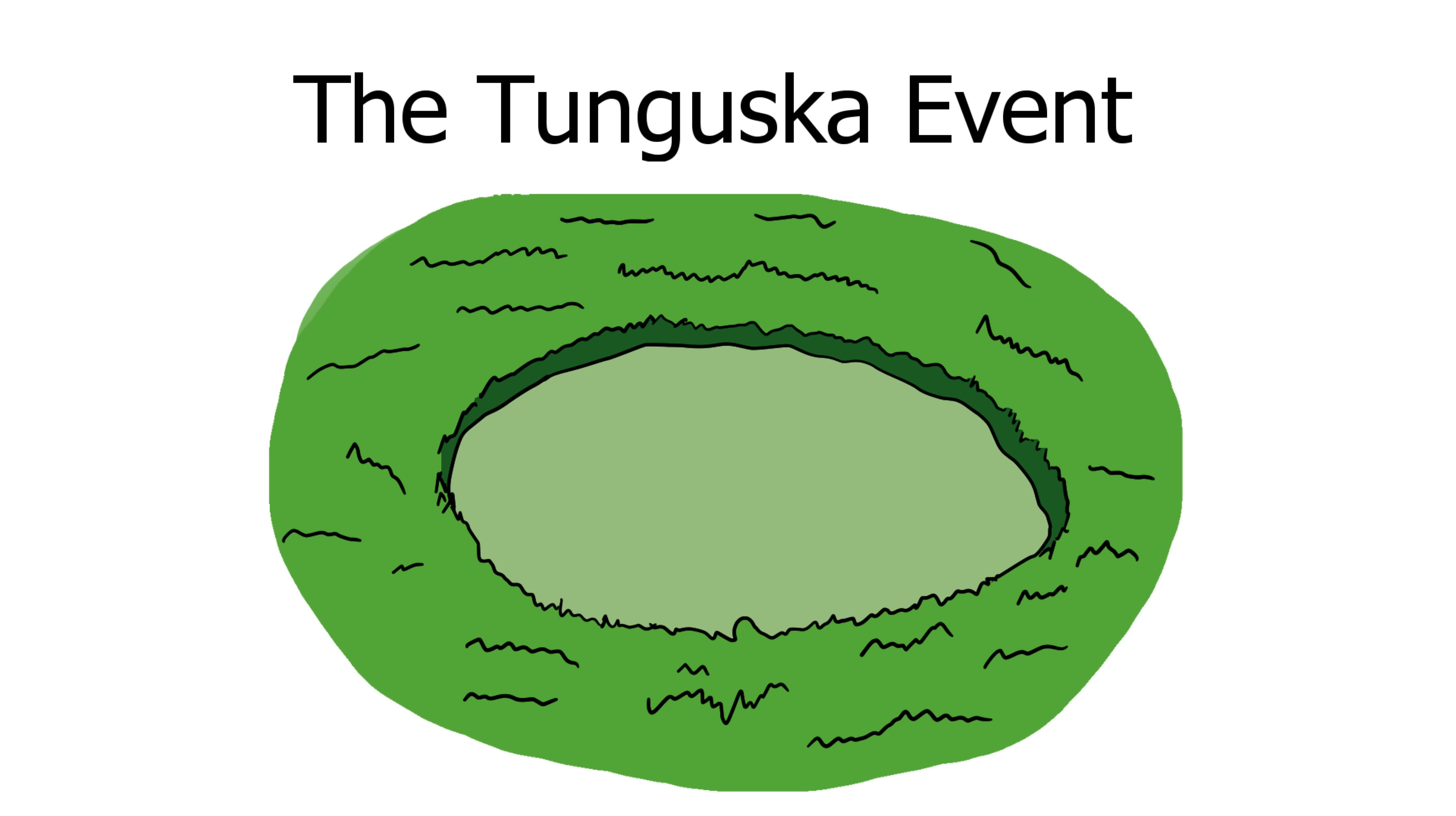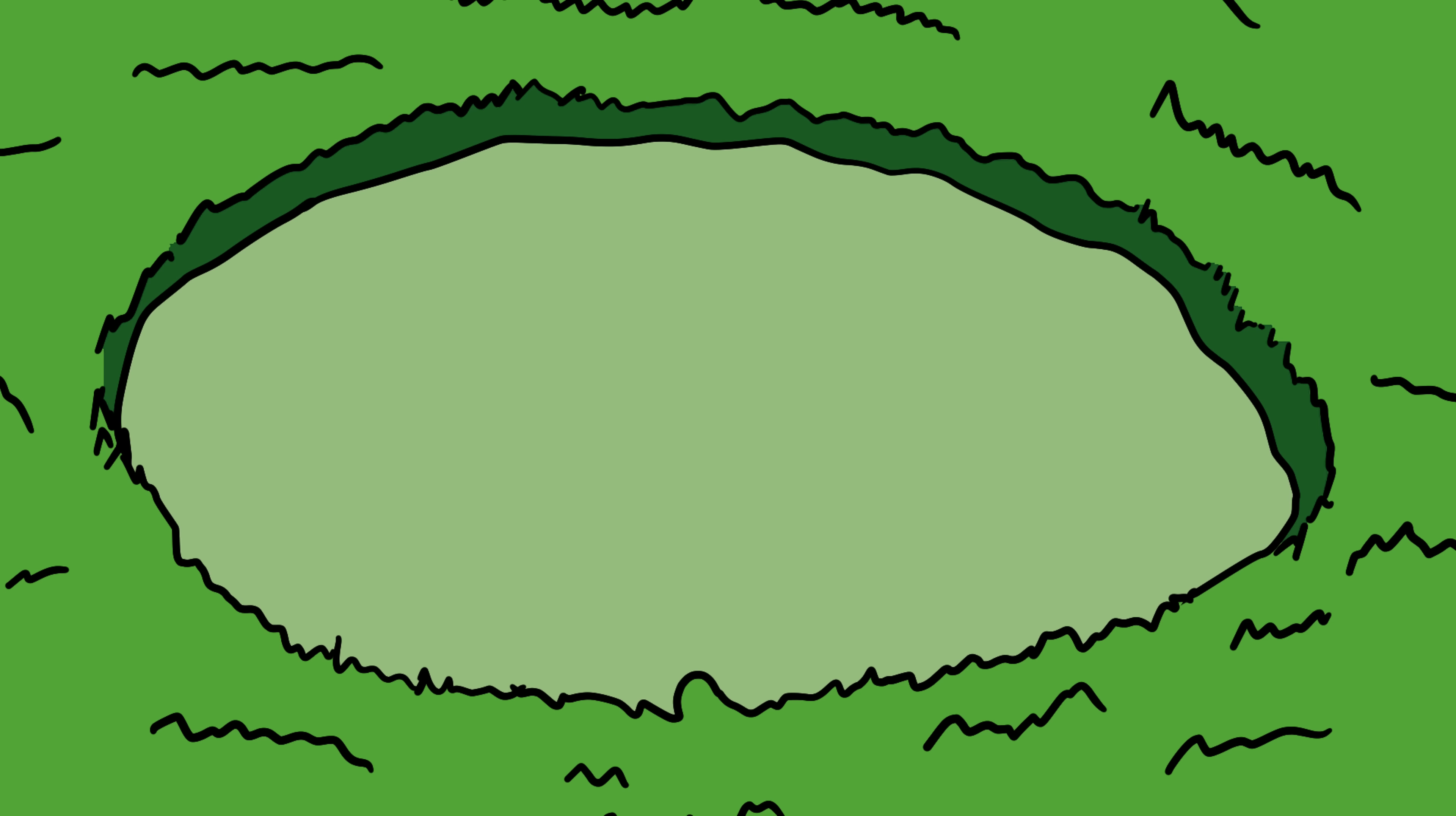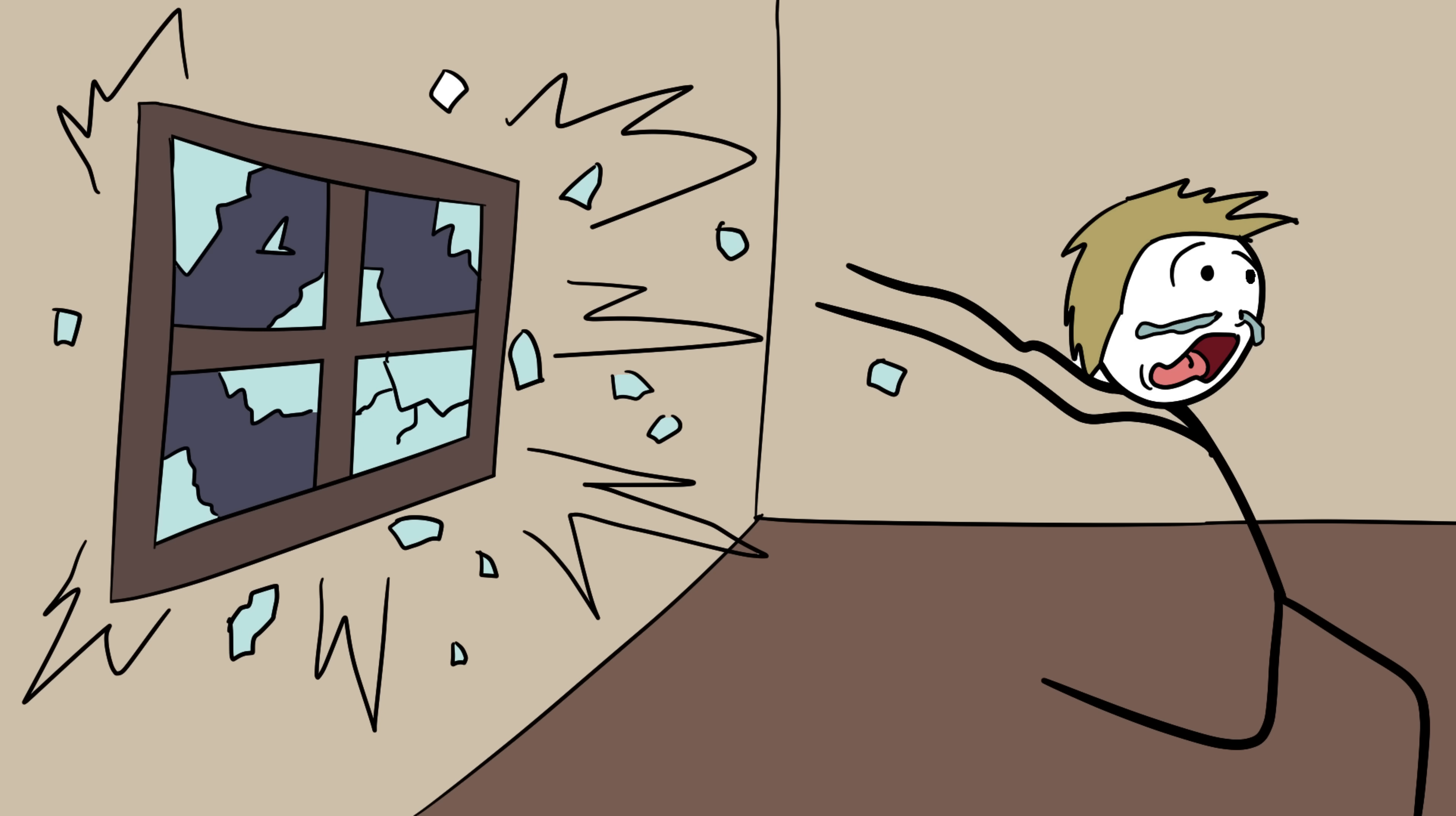Number 8. The Tunguska Event. On June 30th, 1908, something exploded over the Siberian wilderness with the force of 1000 Hiroshima bombs. The blast flattened 800 square miles of forest. Around 80 million trees knocked down like matchsticks, but left no crater. Eyewitnesses reported a fireball racing across the sky, followed by shockwaves that shattered windows hundreds of miles away.